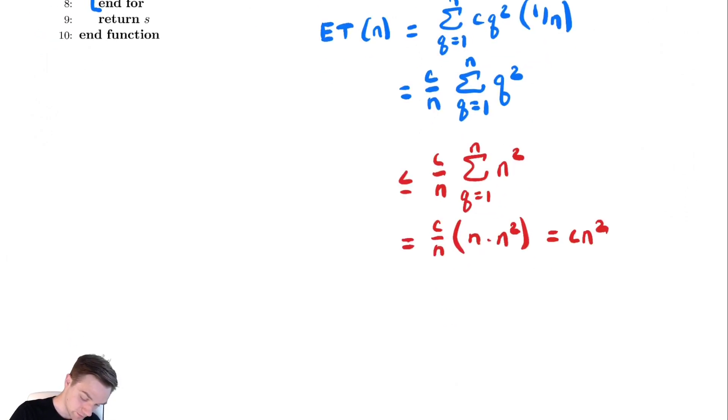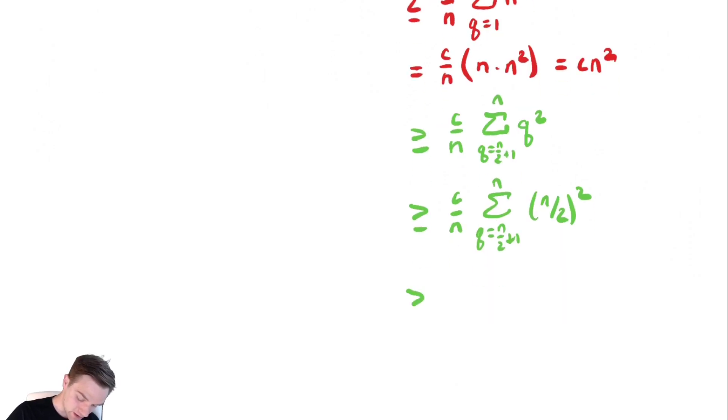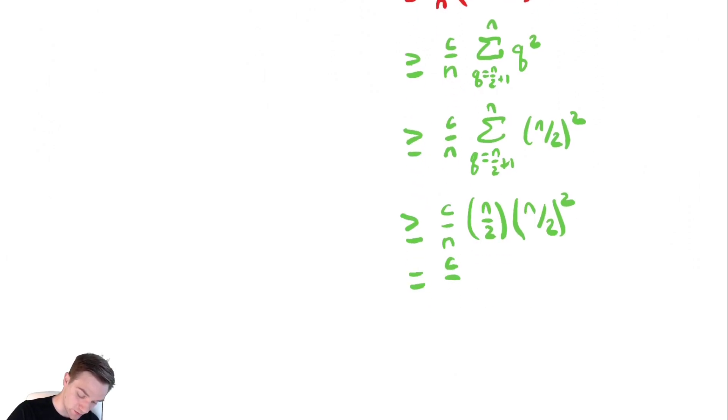Let's bound it below. This is greater than or equal to, the c over n is going to stay out front. This is an increasing summation. The values inside of the summation are an increasing function of the summation index, so we're going to keep the second half of the terms. So my summation is going to go from q equals n over 2 plus 1 to n of q squared. I'm going to plug in n over 2 for q. Sum from q equals n over 2 plus 1 to n of n over 2 squared. This is greater than or equal to c over n times, there's n over 2 terms in that summation, and they're all n over 2 squared. I get c over 8 times n squared.